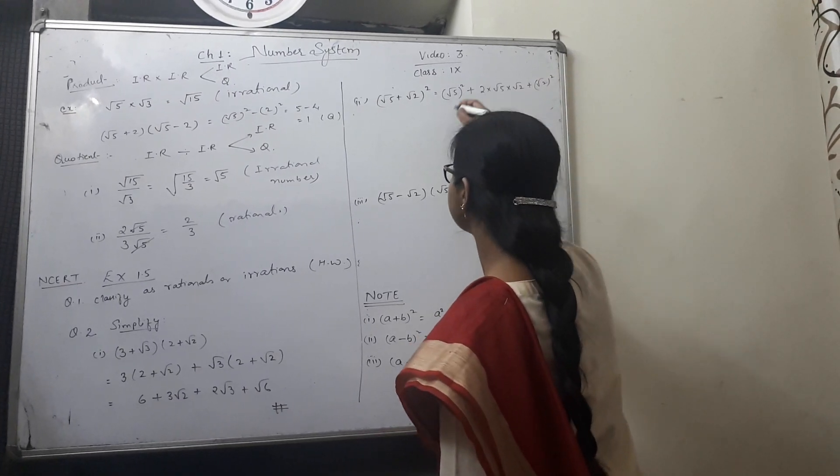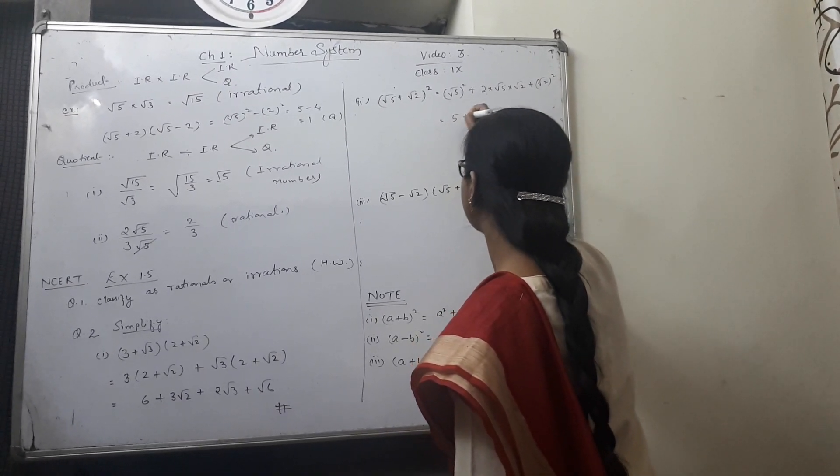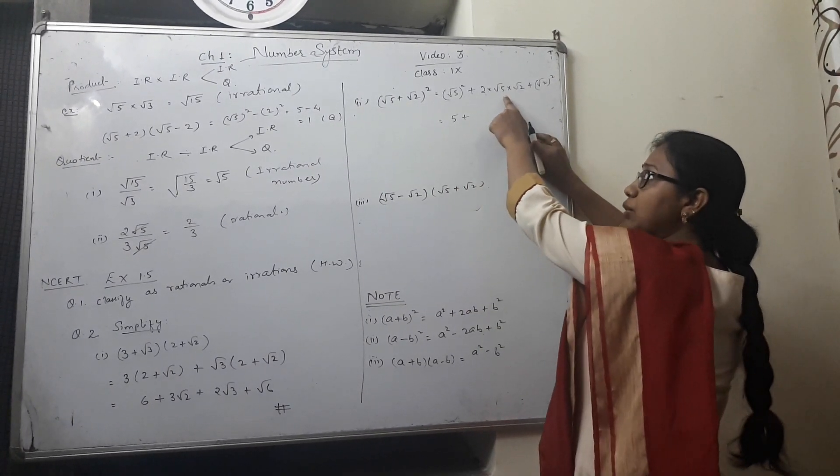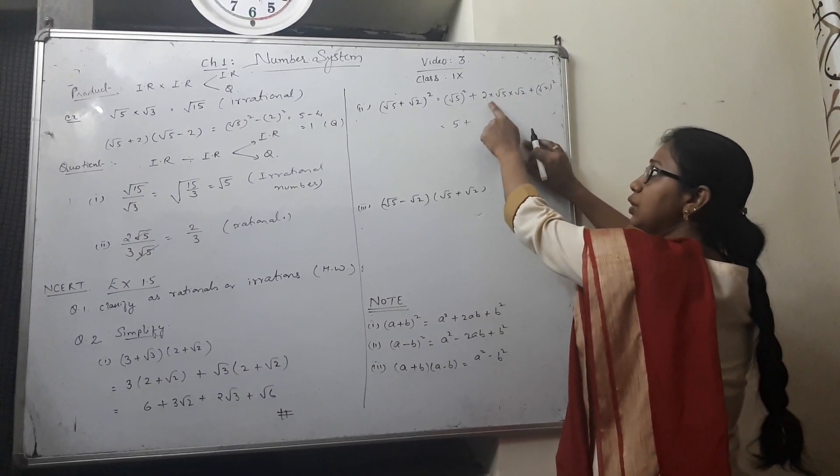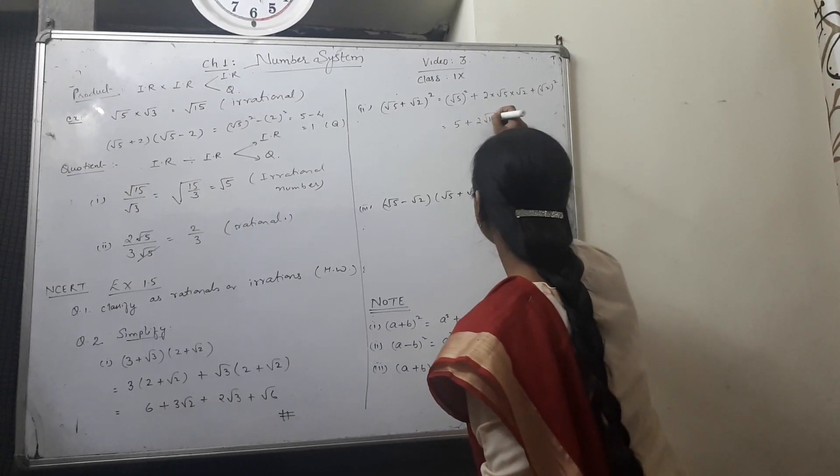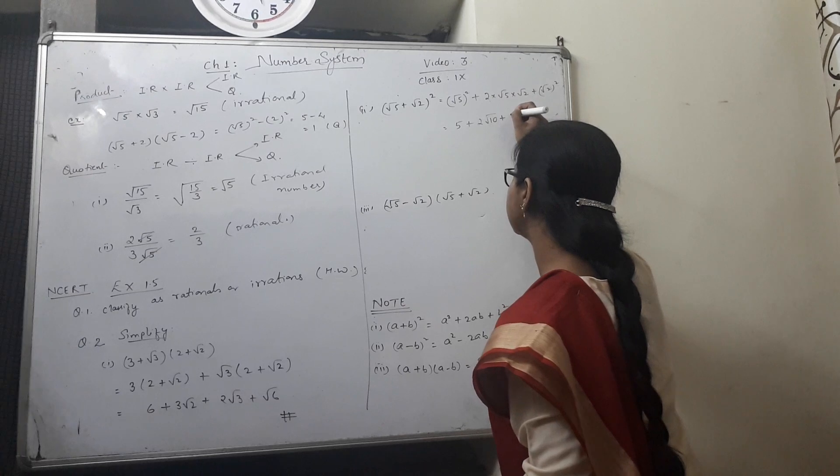Which is root 5 square gives you 5 plus, you have already studied how to multiply 2 irrational numbers. 2 will be as it is and root 5 root 2 gives you root 10 plus root 2 square is 2.